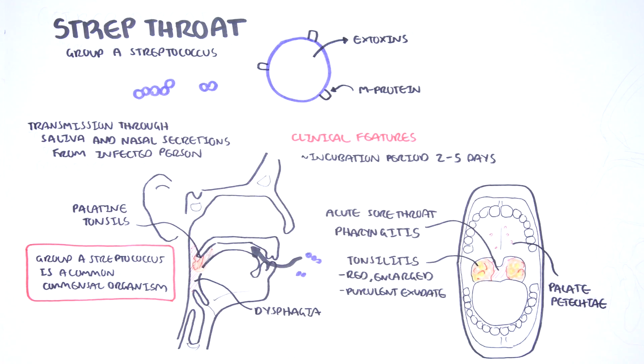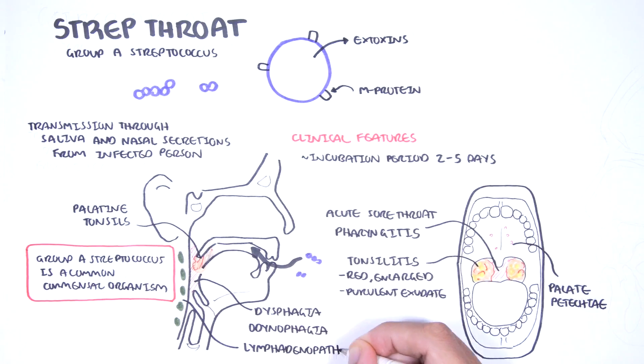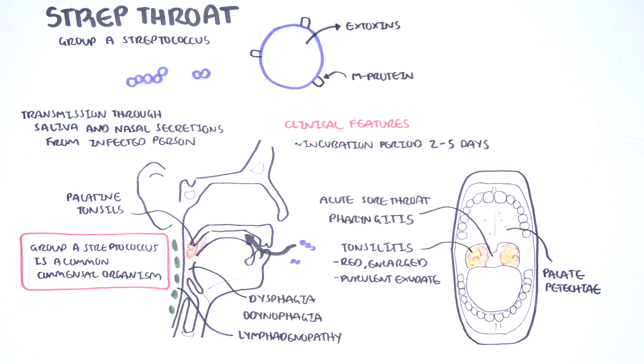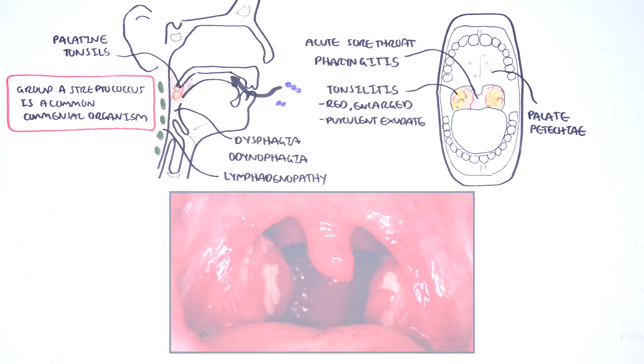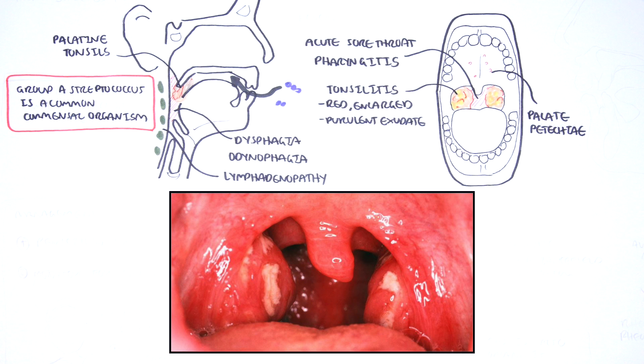Other features include dysphagia, difficulty swallowing, odynophagia, pain when swallowing, and tender cervical lymphadenopathy. On physical examination, the pharynx is red, tonsils are red and enlarged with purulent exudate.